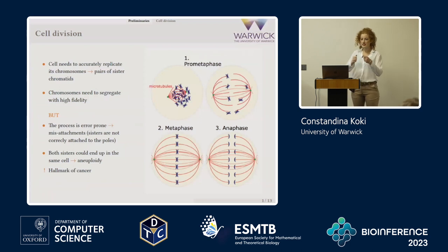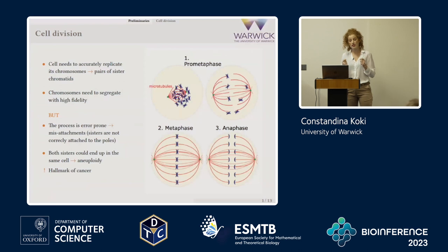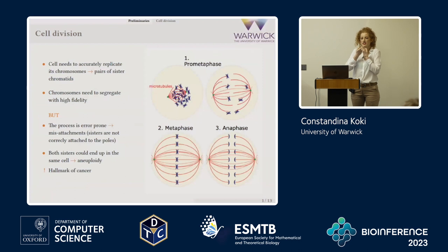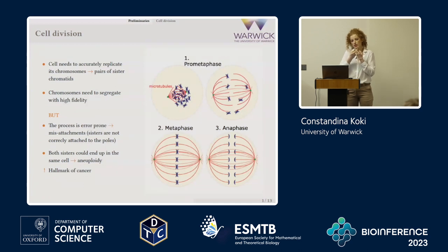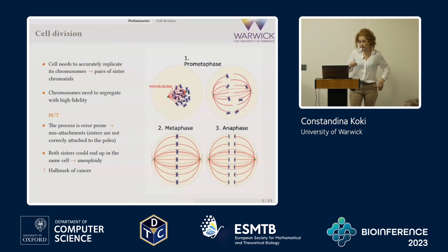The cell needs to accurately replicate its chromosomes. You can see one chromosome here represented as an X shape. They have two sister chromatids — the two strands of the X — which have the same genetic material, and these sister chromatids will end up in two different cells. So the chromosomes need to segregate with high fidelity.